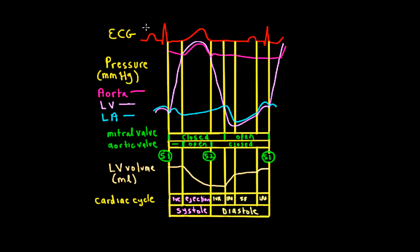The P wave, QRS complex, and T wave are all lined up with specific components. The peak of the P wave is lined up with about the onset of atrial contraction. The peak of the QRS complex is lined up approximately with the onset of ventricular contraction or mitral/tricuspid valve closure. The T wave is lined up with the peak of ejection. Electrical events have to start just a little bit before the mechanical events — the P wave starts before atrial contraction, the QRS complex starts before ventricular contraction, and the T wave starts before the onset of the drop in ventricular pressure, which is the peak of ejection.